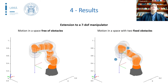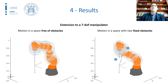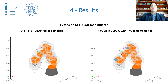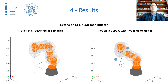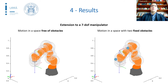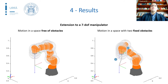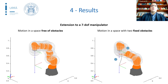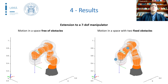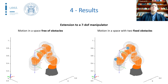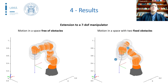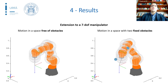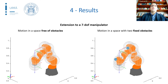The algorithm, initially tested for the simplified planar case, has been extended to a 3D workspace for a 7 degrees-of-freedom redundant manipulator. On the left, a linear motion is done in absence of obstacles, whereas two fixed obstacles interact with the robot on the right, modifying the trajectory of the end effector and the internal configuration of the robot in order to avoid collisions.